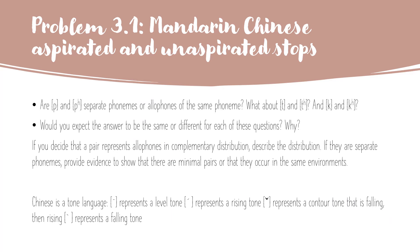Problem 3.1 from Mandarin Chinese was about aspirated and unaspirated stops. From phonetics, we remember that the difference between the P sound could be aspirated or non-aspirated. We show aspiration with the superscript H following that sound. We have also aspirated and unaspirated versions of the T sound and the K sound.